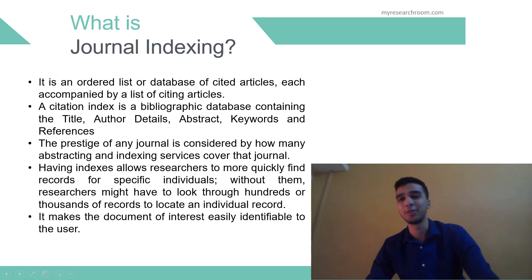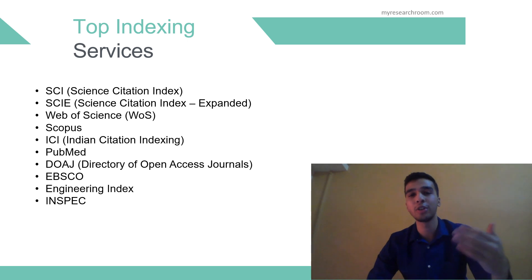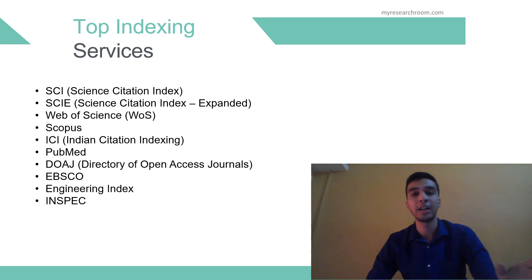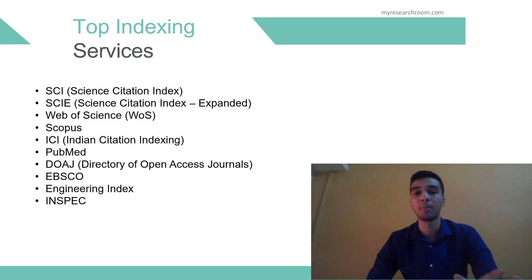So what are some of the top indexing services? The list is topped undoubtedly by SCI. The Science Citation Index is a citation index originally produced by the Institute of Scientific Information (ISI) and created by Eugene Garfield. SCI was officially launched in 1964 and is owned by Thomas Reuters. Described as the world's leading journal of science and technology, this journal has a rigorous selection process. Most of the journals indexed by SCI are in the quartile 1 range of the journal rankings.